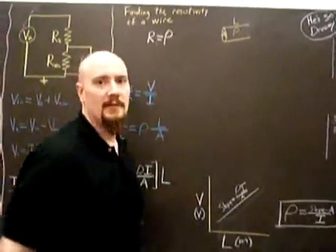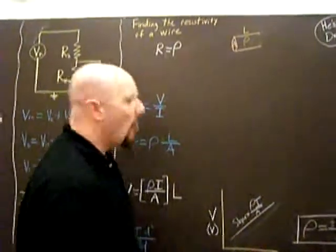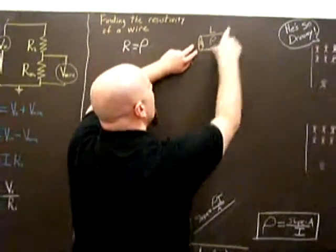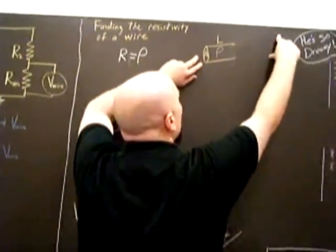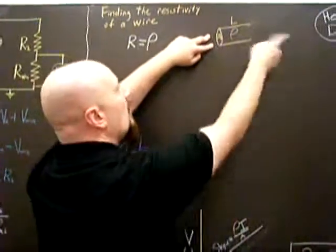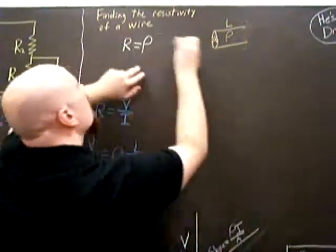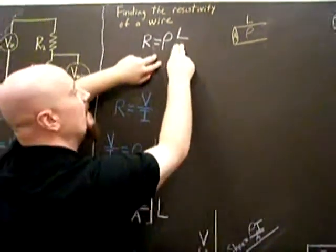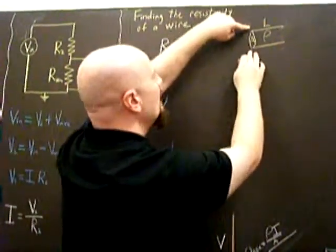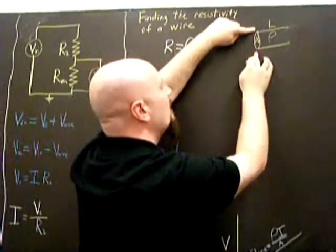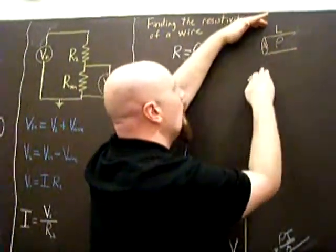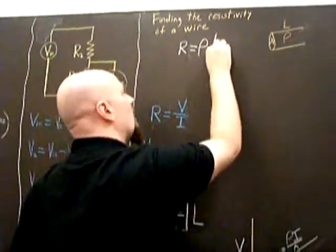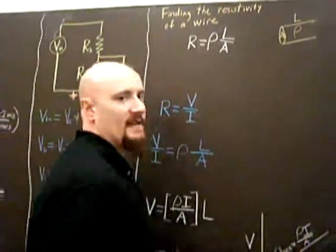Resistivity is also temperature dependent. Now we have to consider the geometry of the wire. If the wire was a lot longer, that's a lot more space for the charged particles to travel, so the longer the wire, the more the resistance — a direct dependence. If we consider the cross-sectional surface area, if it was bigger, there's more room for the charged particles to flow — an inverse dependence on the cross-sectional surface area.